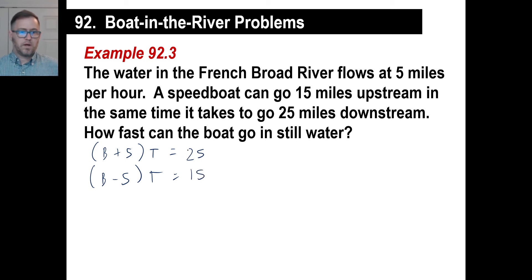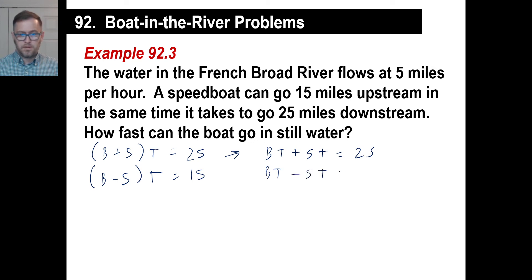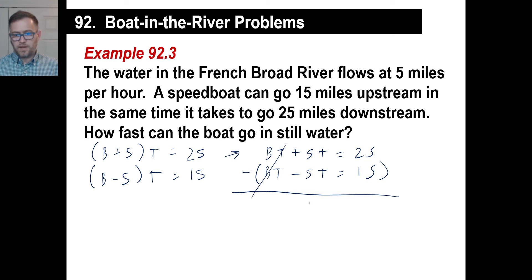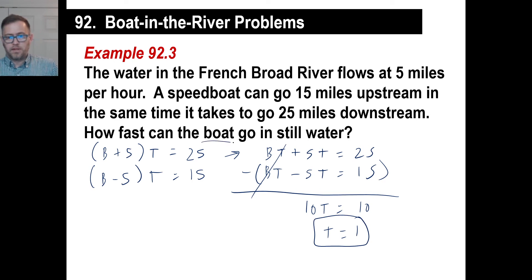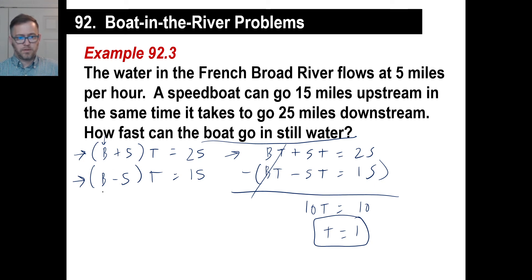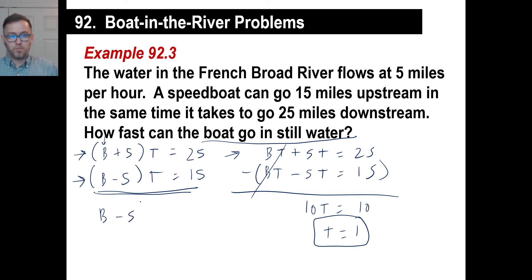Multiplying across: bt + 5t = 25, and bt − 5t = 15. We want to eliminate bt, so we subtract: 5t − (−5t) = 10t, and 25 − 15 = 10, so t = 1 hour. They're asking how fast the boat goes in still water — we want b. Substituting t = 1 into the upstream equation: b − 5 = 15, so the boat is going 20 miles an hour.